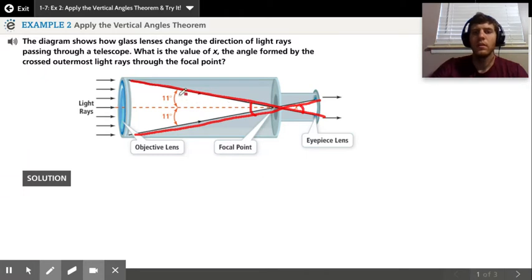We know each of these small angles here is 11 degrees, so the whole thing is going to be 11 plus 11, which is 22. Since vertical angles are congruent, we know that x is going to be equal to 22 degrees.